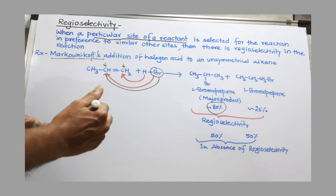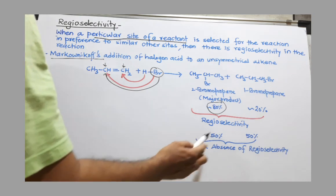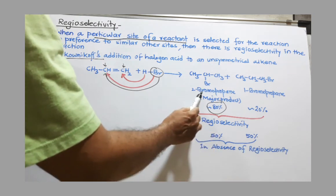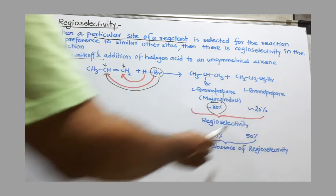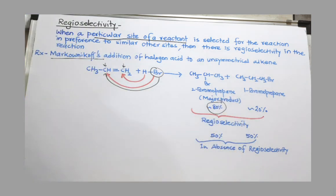In absence of regioselectivity, we would have got 50% 2-bromopropane and 50% 1-bromopropane. So this is the meaning of regioselectivity. Thank you.